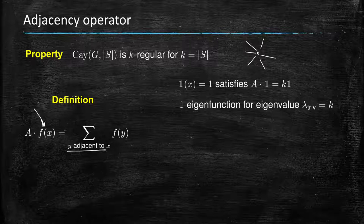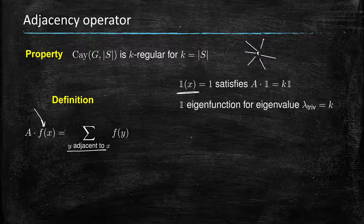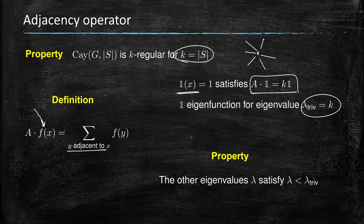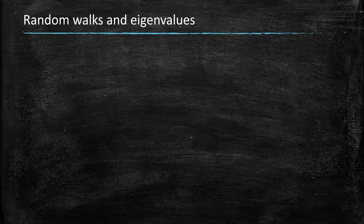First property we need to insist on is the fact that there are eigenfunctions. In particular, the most easy to find is the eigenfunction which is the constant function equals to 1. If you apply the adjacency operator to the function 1 of x equals 1, you'll notice it satisfies a times 1 equals k, where k is the cardinality of S. This is an eigenfunction for this eigenvalue we call lambda triv, the trivial eigenvalue. It turns out all other eigenvalues in absolute value are less than this lambda trivial. We know for sure about one of them, and the question is, what do the others look like?